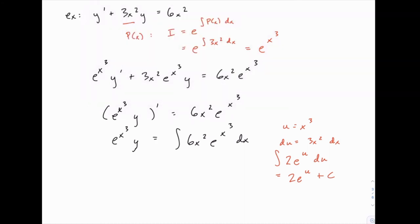If we come back here and replace u with x cubed, that's what we get for the right-hand side. So we have e to the x cubed times y equals 2 e to the x cubed plus c.